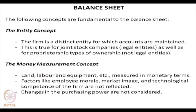We look at the balance sheet first. There are certain concepts that are very fundamental to it, some of which we have already discussed when we took up the double entry bookkeeping system, particularly the concept of a firm being an entity. The first concept is that the firm is a distinct entity for which accounts are maintained. This is true for joint stock companies that are legal entities as well as for proprietorship types of ownership such as an entrepreneur who may be a non-legal entity.